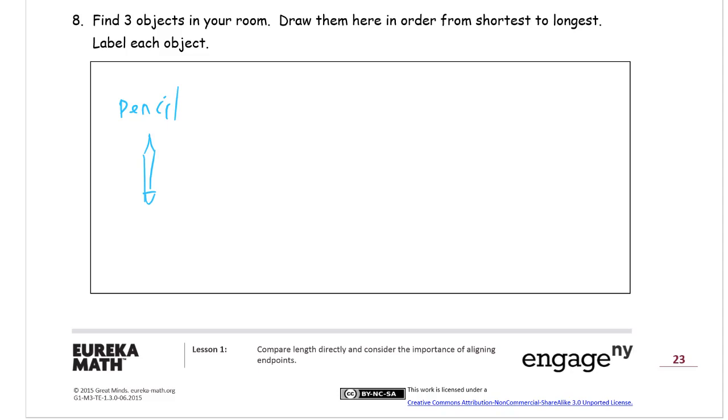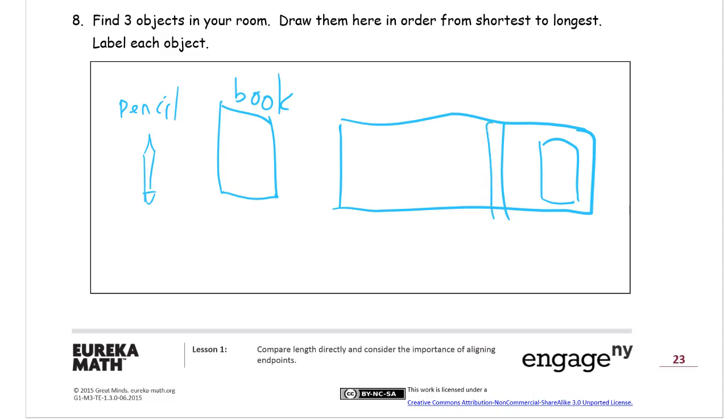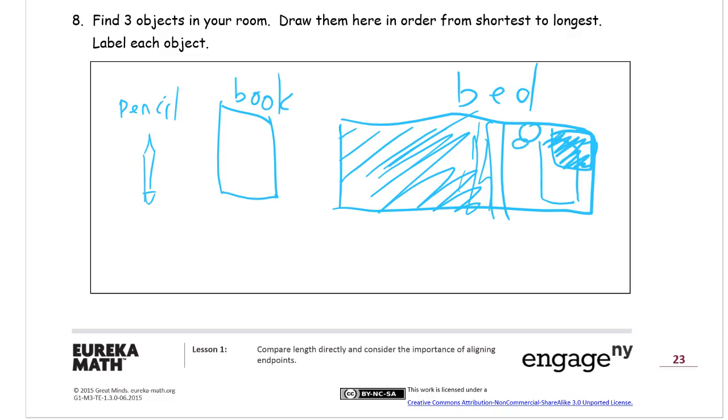And then something like a book would be a little bit longer than a pencil. And then there's a bed with a pillow on it and blankets, however you want to draw your bed. Maybe you've got two pillows and a teddy bear on it. With a smile. We can make him a Pooh bear. Give him a red shirt.